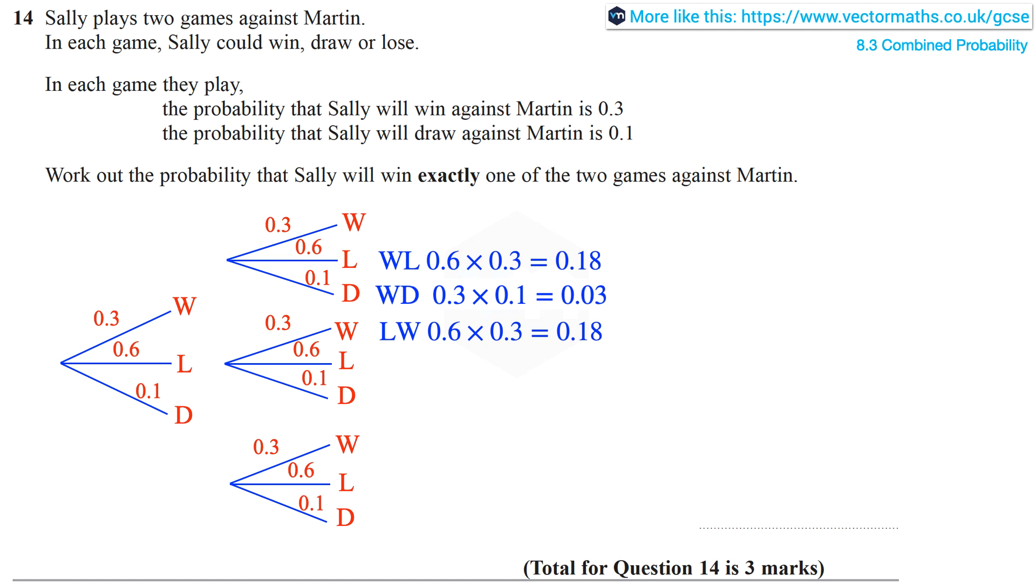The probability that she draws then wins is 0.03. If we add these together, we get a total of 0.42, and these are the only scenarios where Sally wins exactly one of the two games. So the answer is 0.42.